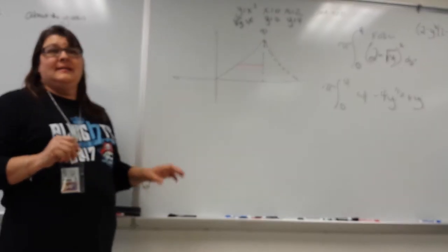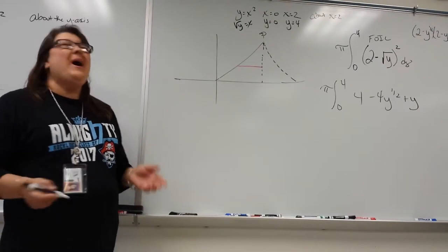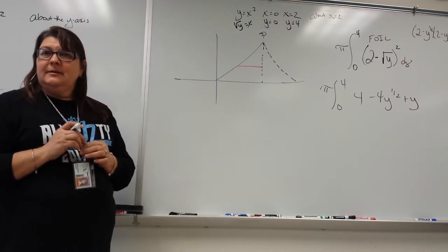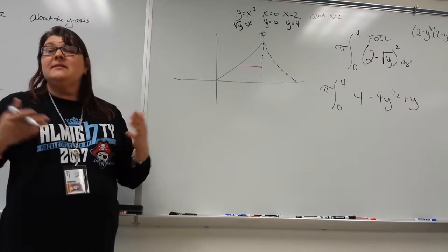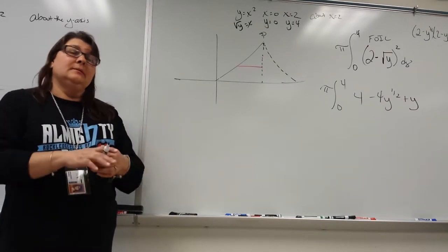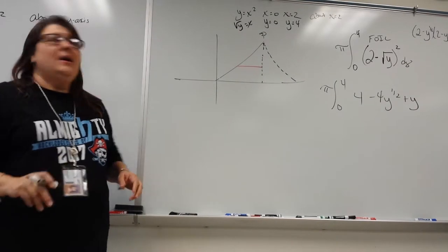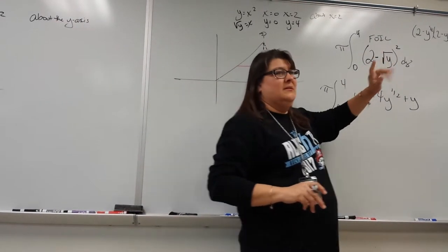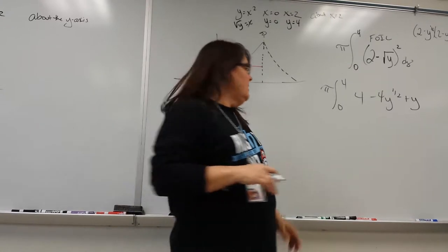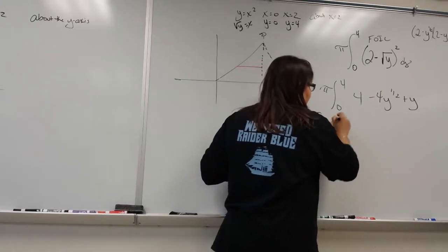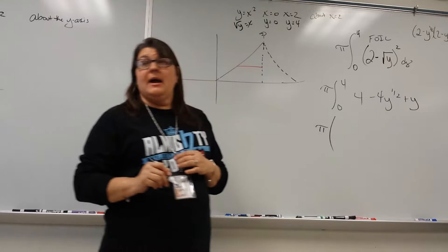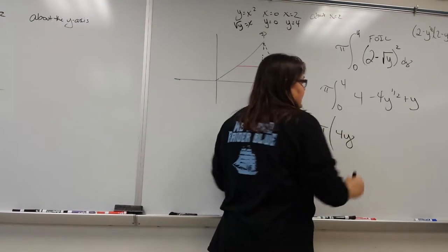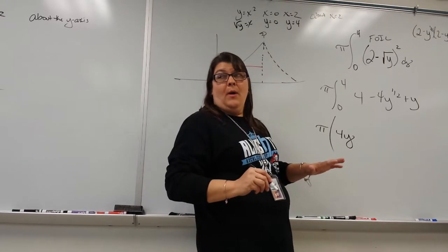Now, can I easily take the integral? Yes. Why would I not want to use the u-substitution method here? Because if I can expand it, I'd rather do that — fewer mistakes. You really don't want to use u-substitution with this because it's got a square root inside; it just causes more chaos. Don't forget your pi — pi must go for the ride. And then your integral is 4y — people want to say 4x because we're used to that, but it's 4y.